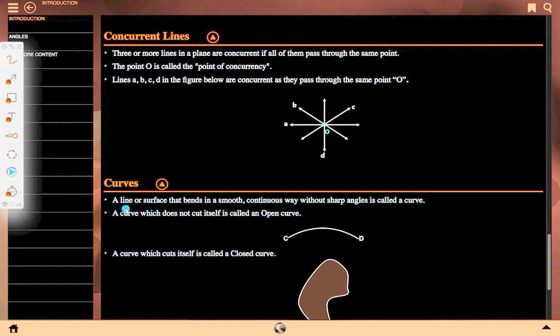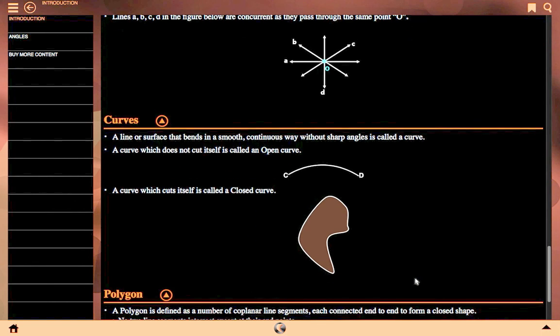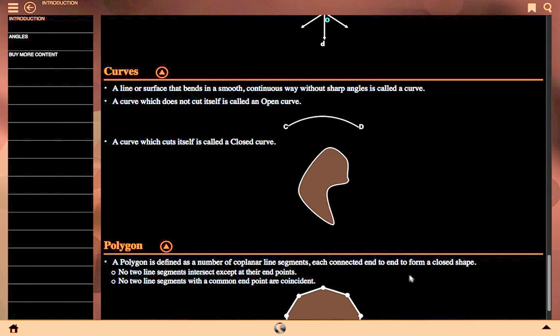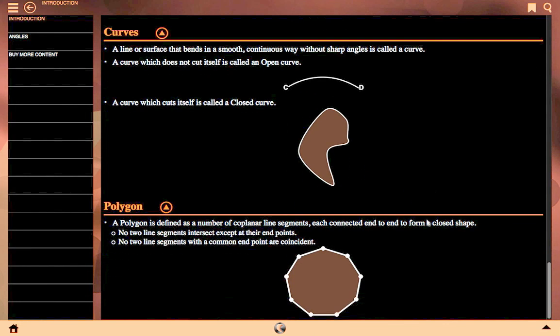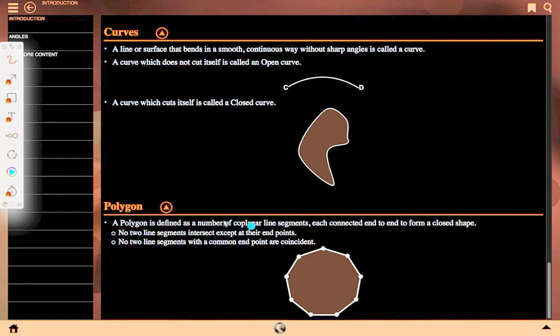Curves: A line or surface that bends in a smooth continuous way without sharp angles is called a curve. A curve which does not cut itself is called an open curve, like C and D. A curve which cuts itself is called a closed curve. Here this curve cuts itself so it is closed from all sides.